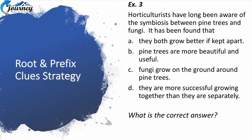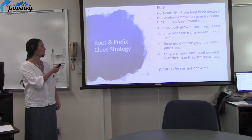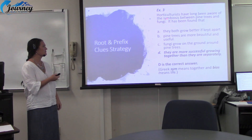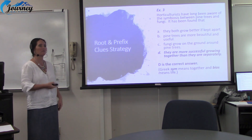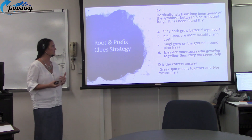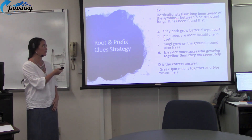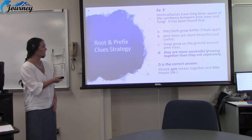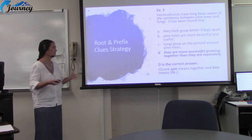Still using root or prefix clues — look at the word 'symbiosis.' Do you know any part of this word? The answer is D: they are more successful growing together than they are separately. Why? Because S-Y-M means together, and B-I-O, like in biology, means life. So together and life — that's what you could have inferred from looking at the word parts. Growing together: this is the only answer that says to grow together.